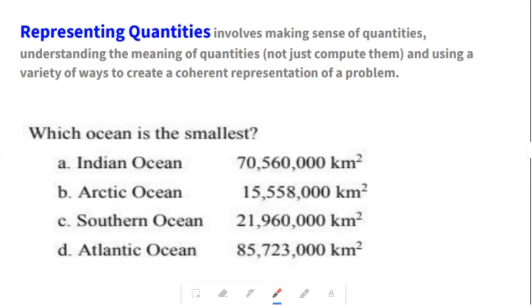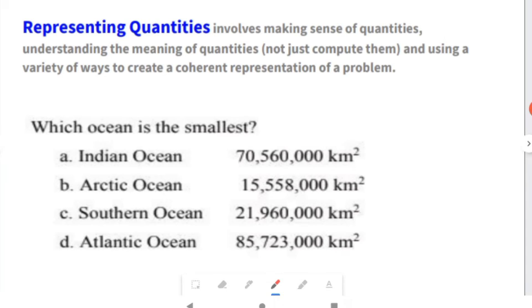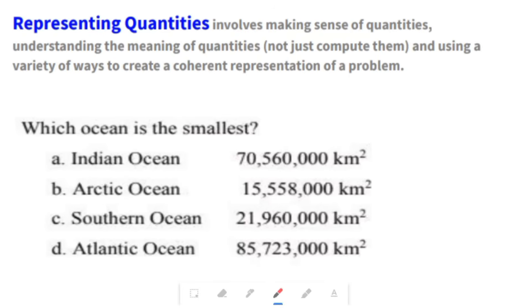Representing quantities. This involves making sense of quantities, understanding the meaning of the quantities, and using a variety of ways to create a coherent representation of a problem. These question types may vary. For this example, it asks, which ocean is the smallest? All you'd have to do is to look at the options to see which of the values is the smallest. And, if you observe closely, the Arctic Ocean would be the smallest.